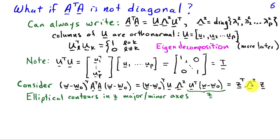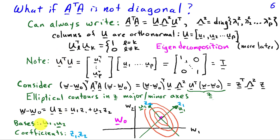Our squared error cost function has elliptical contours, just as before, but now in the z directions. The major and minor axes are oriented according to the z directions, which differ from w because of the transformation by Uᵀ. Since UᵀU = I, we can write w − w₀ = Uz, meaning the vector (w − w₀) can be expressed with coefficients z₁ and z₂ along basis vectors u₁ and u₂. So the major and minor axes oriented along z₁ and z₂ correspond to u₁ and u₂ directions in w, and w₀ defines the center.